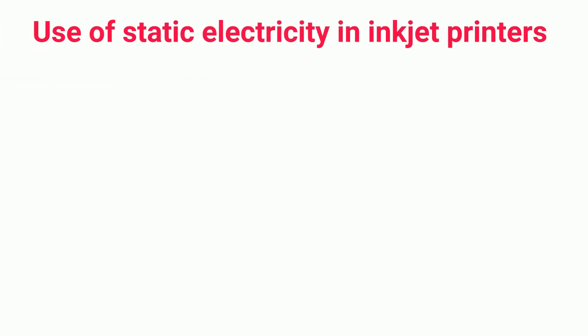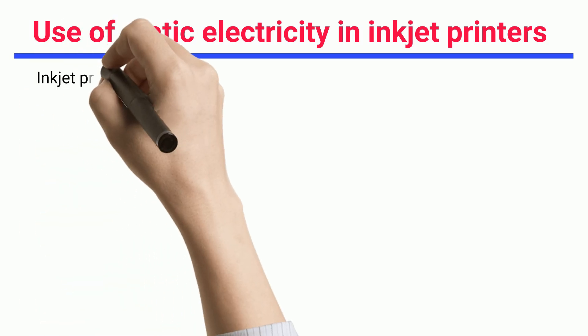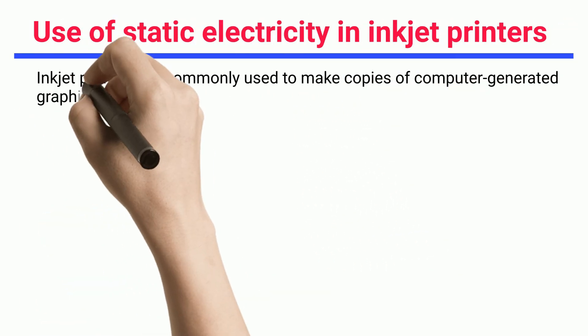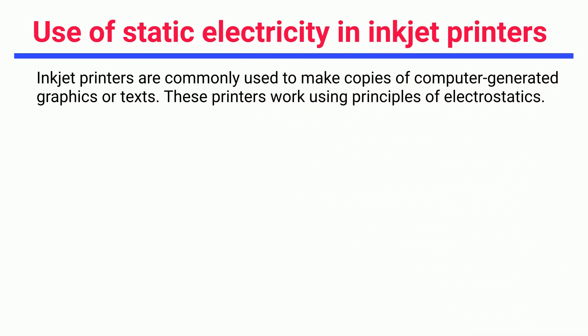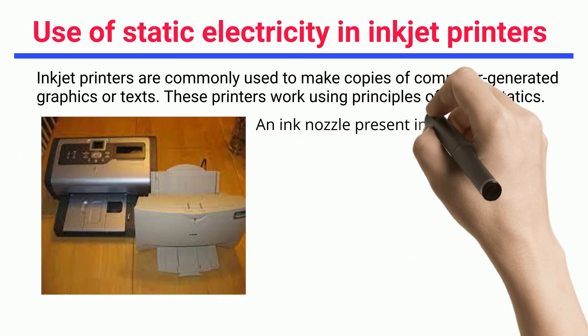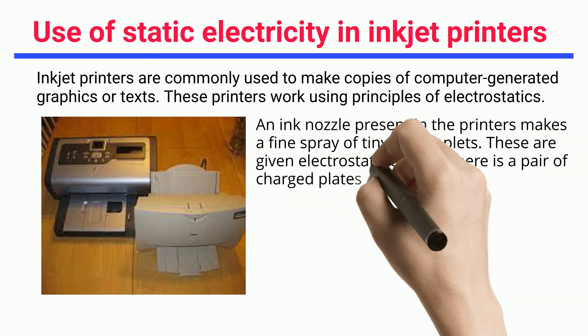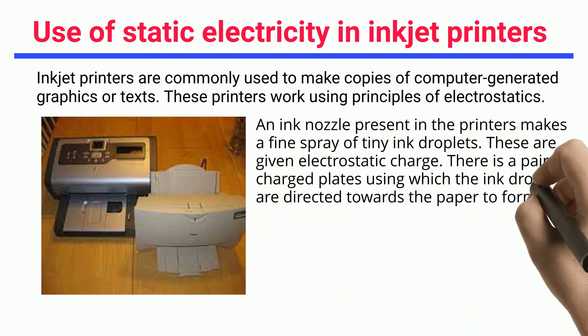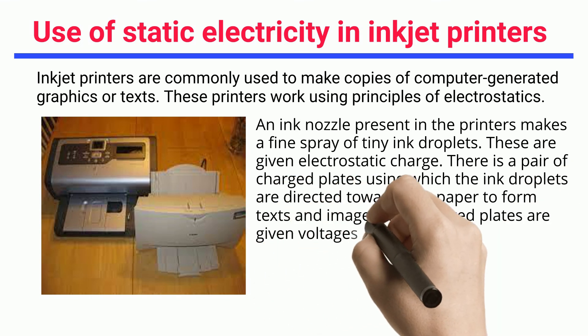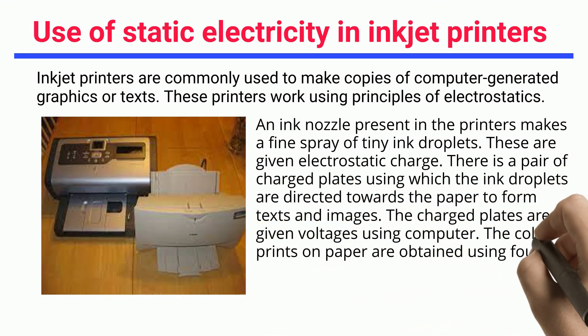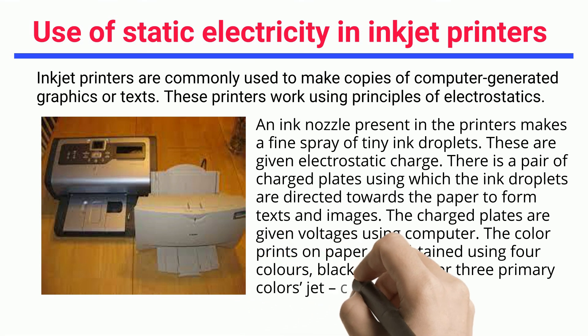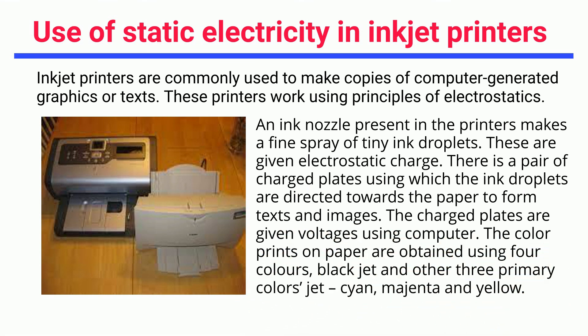Inkjet printers are commonly used to make copies of computer-generated graphics or texts, working using principles of electrostatics. An ink nozzle in the printer makes a fine spray of tiny ink droplets, which are given an electrostatic charge. A pair of charged plates directs the ink droplets towards the paper to form texts and images, with voltages controlled by computer. Color prints are obtained using four colors: black and three primary colors — cyan, magenta, and yellow.